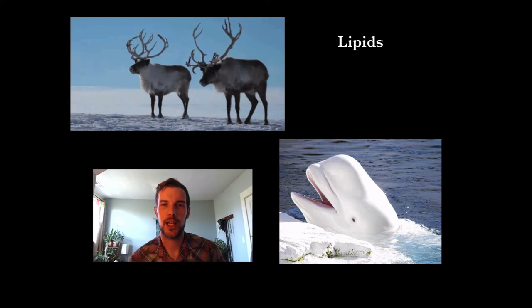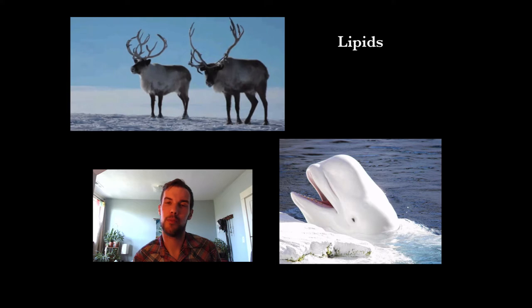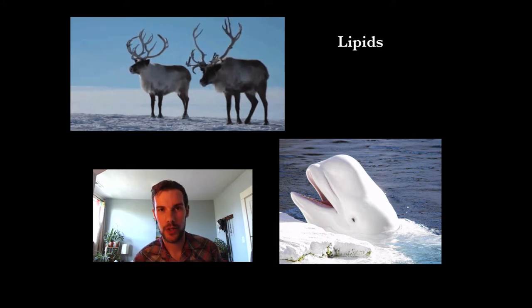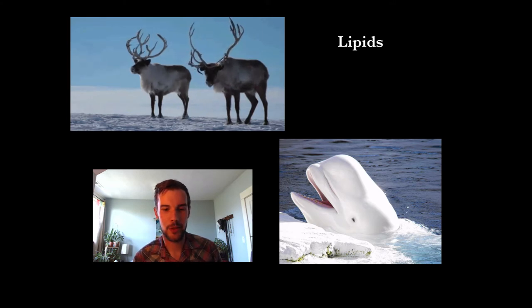These animals living in the Arctic have different types of adaptations in order to stay warm and it turns out lipids play a huge role in that. The beluga whale will have blubber which is a different type of lipid aimed for storage, and that blubber insulates the animals so it can live in colder waters.